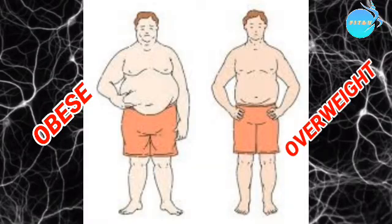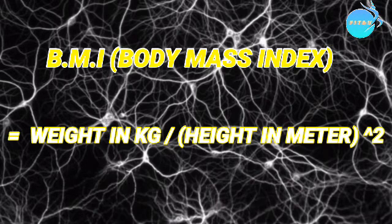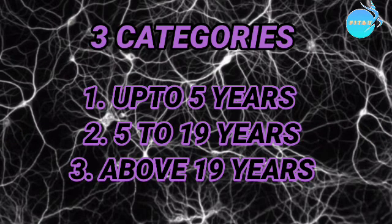How to know whether a person is obese or overweight? The World Health Organization categorizes a person as obese or overweight on the basis of their BMI. The body mass index is the ratio of weight of the person in kg divided by the square of height in meters. The WHO categorizes people under three different age groups: first, up to 5 years; second, 5 to 19 years; and third, adults above 19 years.